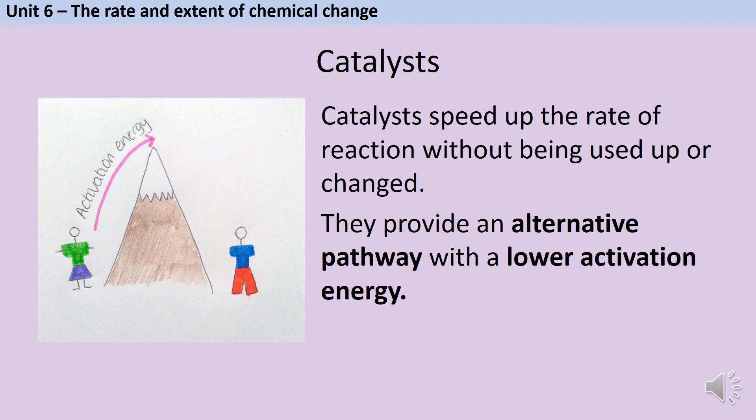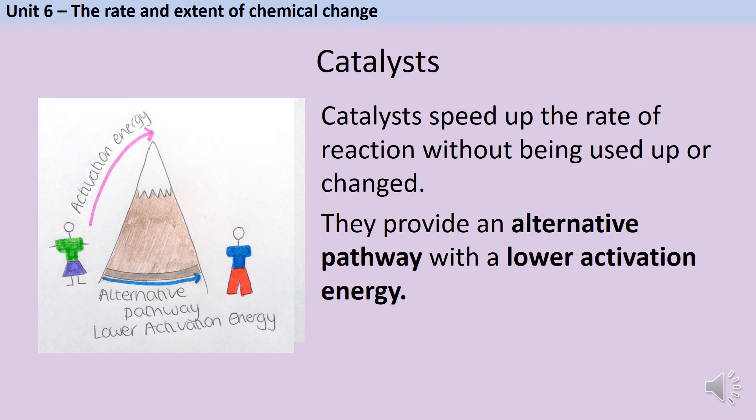All catalysts work by providing an alternative pathway that has a lower activation energy. That sounds a bit complicated, but it's actually quite straightforward to explain. Imagine that you were going to go on a trip to visit your friend, and that trip involved you walking over a mountain. Walking over the mountain takes quite a lot of energy. That's our activation energy. Now there's nothing that I can do to make that trip over the mountain take less energy. Mountain climbing just takes a lot of energy. But it would take me less energy if instead of going over the mountain, I took an alternative path. If I had a shortcut that went round the bottom of the mountain. That's basically what catalysts are doing. They're providing an alternative pathway that requires less energy to use.